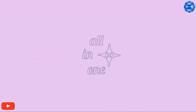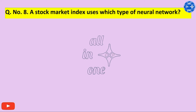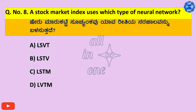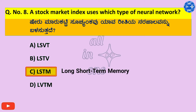Question number 8. A stock market index uses which type of neural network? Options: A. LSTM, B. LSTM, C. LSTM, D. LVTM. Right answer is C. LSTM — Long Short-Term Memory.